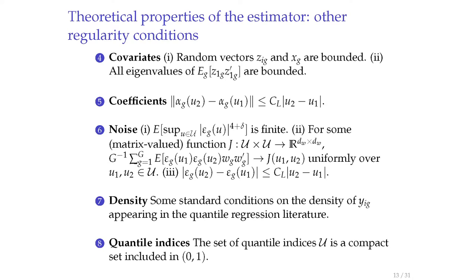A nice feature is that our methods apply even if the number of observations per group is smaller than the number of groups—unlike typical nonlinear panel data models. The regularity conditions include finite moments, bounded covariates (a technical simplification using empirical process methods), Lipschitz continuity of coefficients in the quantile index, standard quantile regression assumptions on conditional densities, and the set of quantile indices of interest being a compact set within (0,1)—excluding extremal quantiles near zero or one.